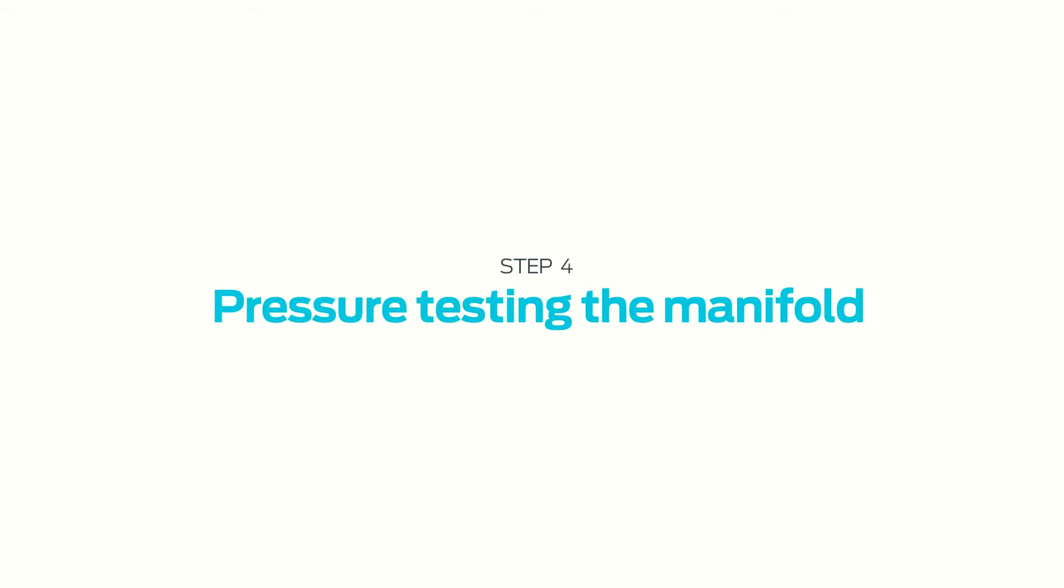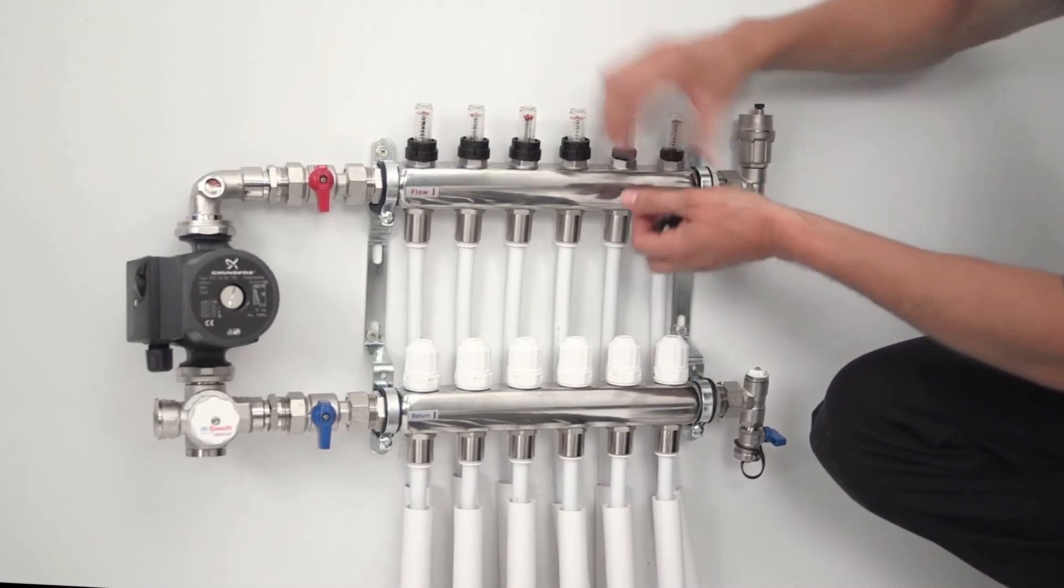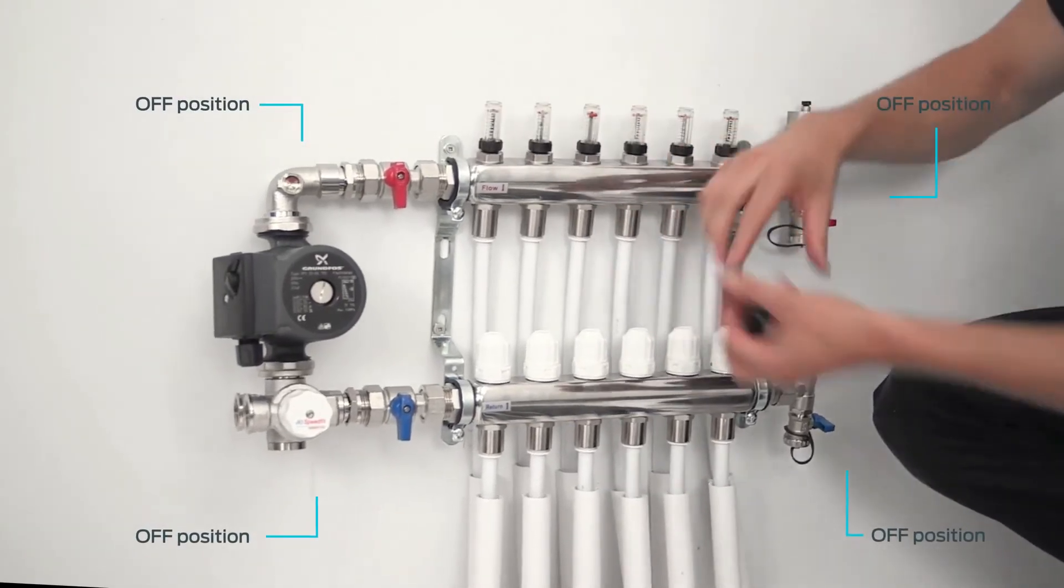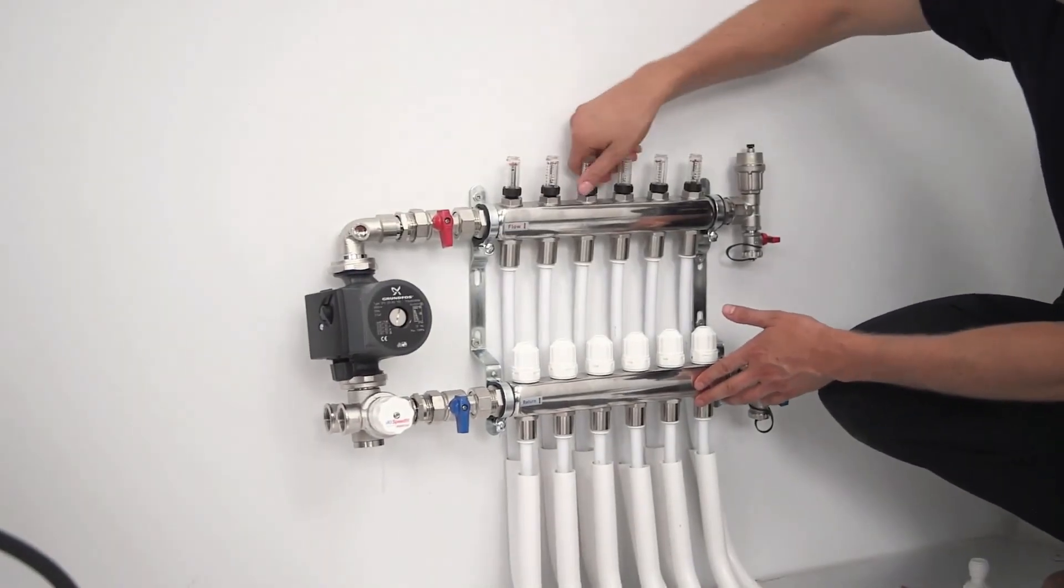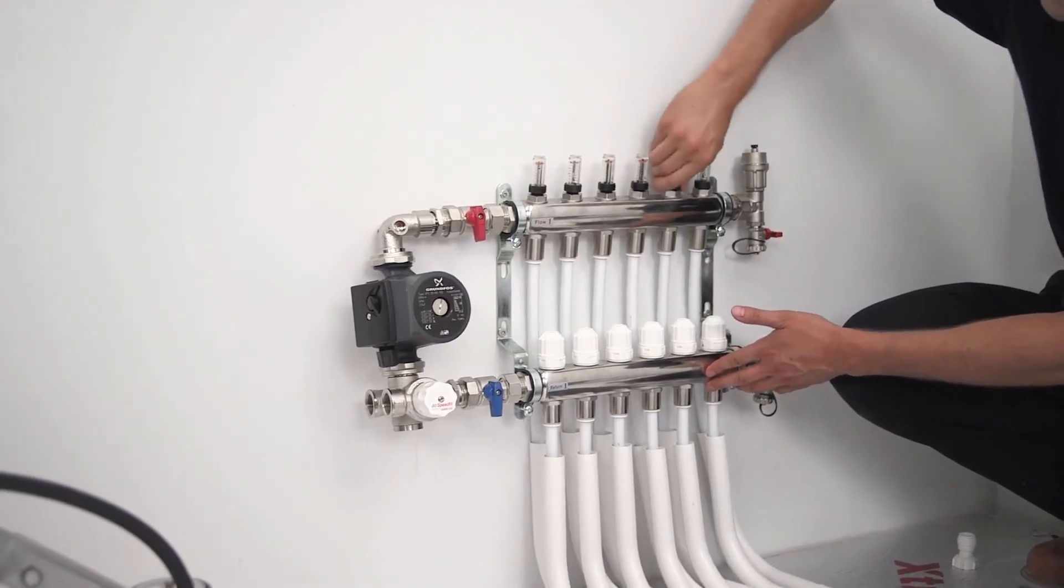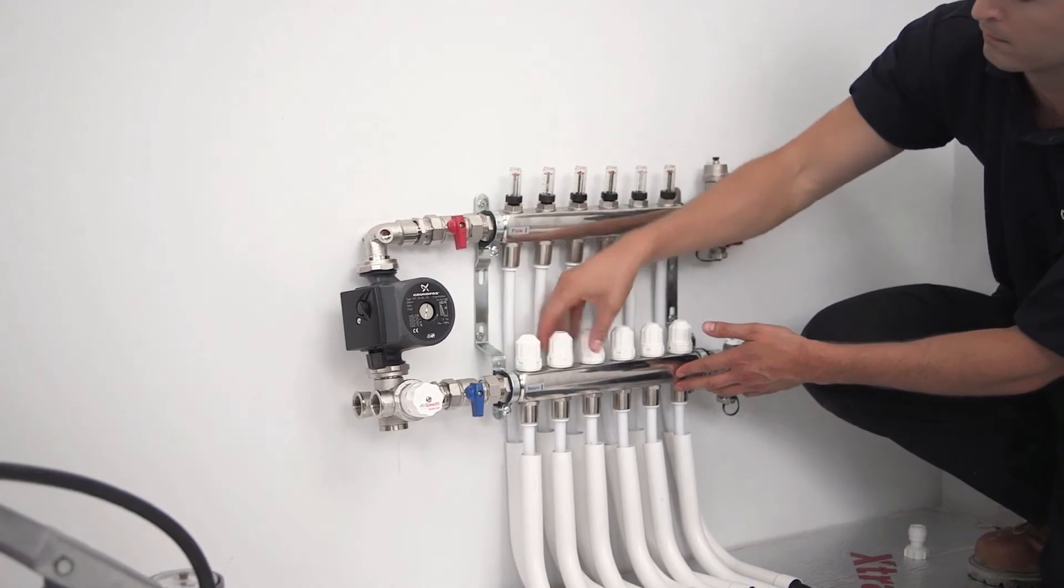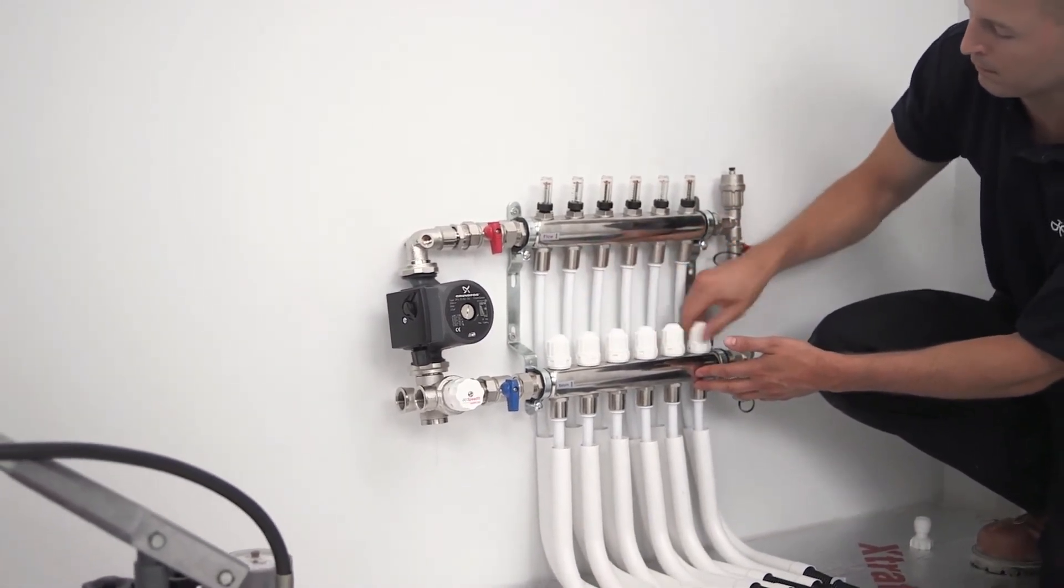Pressure testing the manifold. Isolate the manifold from the heating system by turning the ball valves to the off position. Open all flow gauges at the top of the manifold by lifting the locking cover and turning the adjuster anti-clockwise. Ensure all temporary adjuster heads are in the fully open position by turning anti-clockwise.